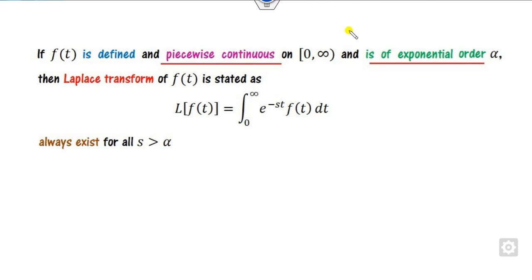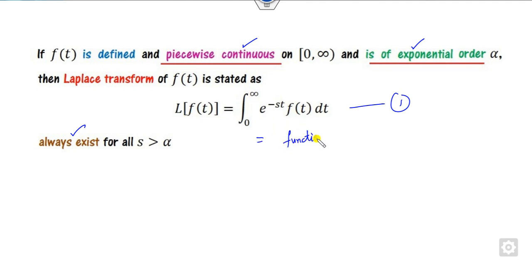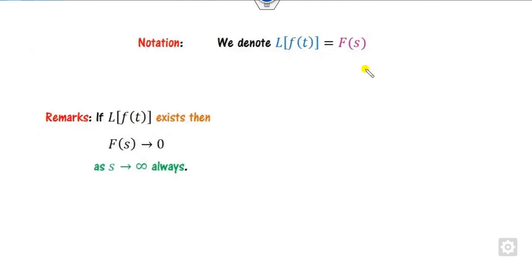As we discussed in the last class, if a function f(t) is piecewise continuous and of exponential order, then the Laplace transformation always exists by using equation number 1. Whenever this Laplace transformation exists, it is a function of s only. We will denote this as F(s), and whenever you want to check your answer, when you substitute s as infinity, F(s) will always go to 0.